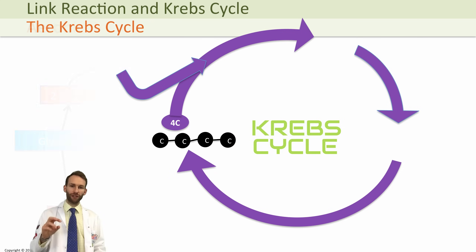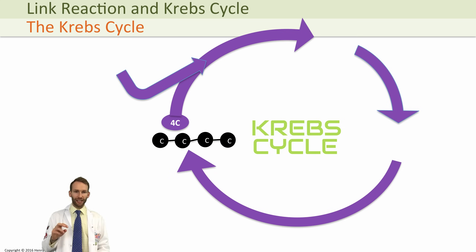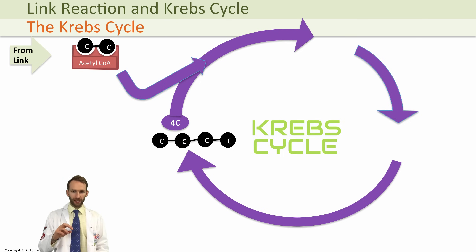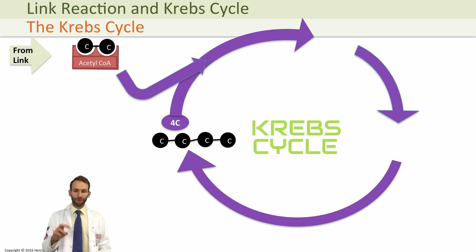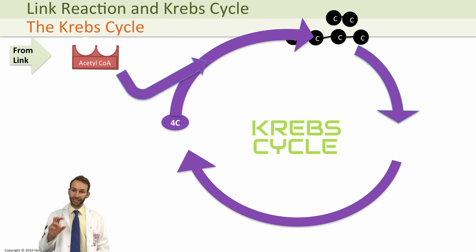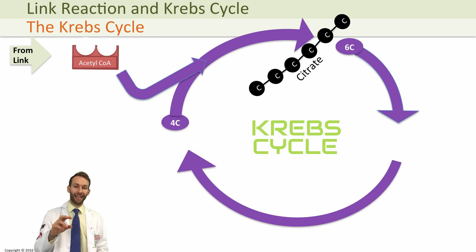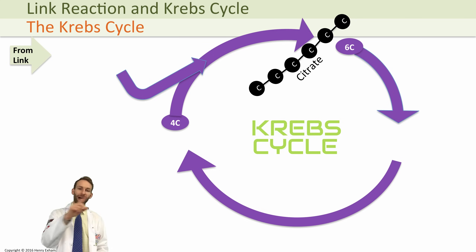Once you've got your acetyl-CoA, it will move into what we call the Krebs cycle. It actually combines with a four-carbon molecule to make a six-carbon molecule called citrate. This frees up the CoA to then go back to the link reaction to be used again.